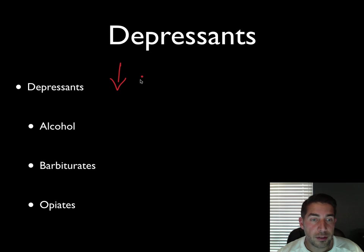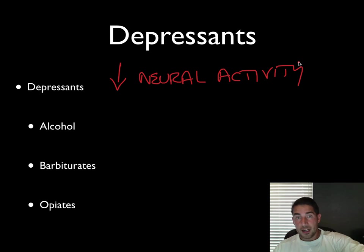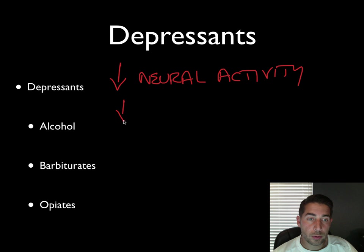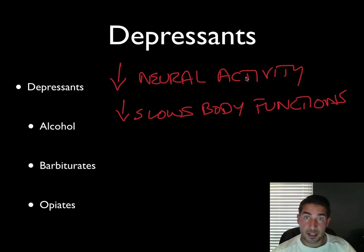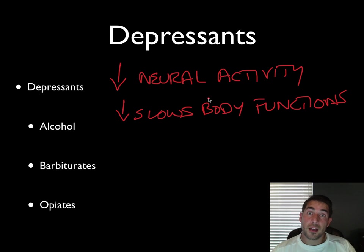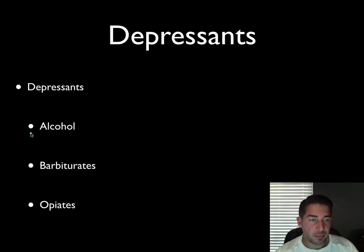A depressant reduces neural activity — it depresses it, presses it down, and slows body functions. Think of all things that your body does: depressants slow all that down. Your ability to problem solve, your ability to think, your reaction time — anything that your body needs its nervous system to do, depressants slow that down.